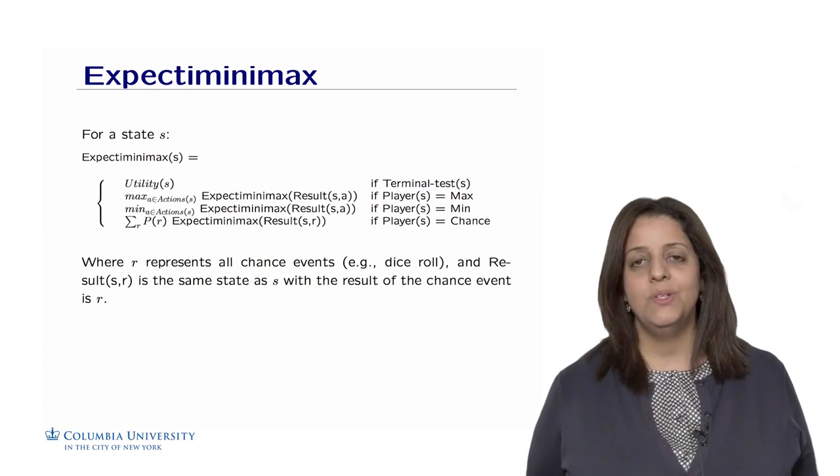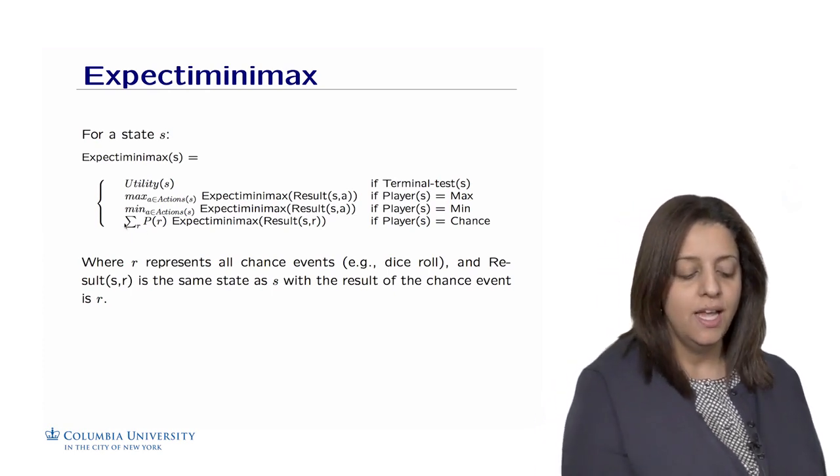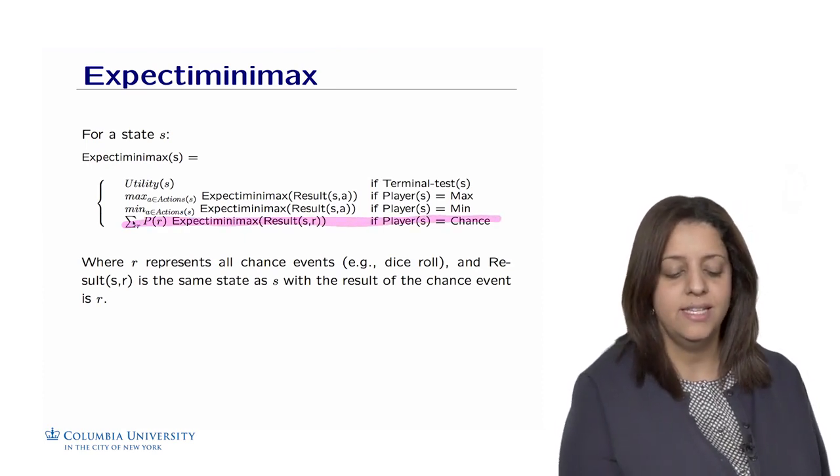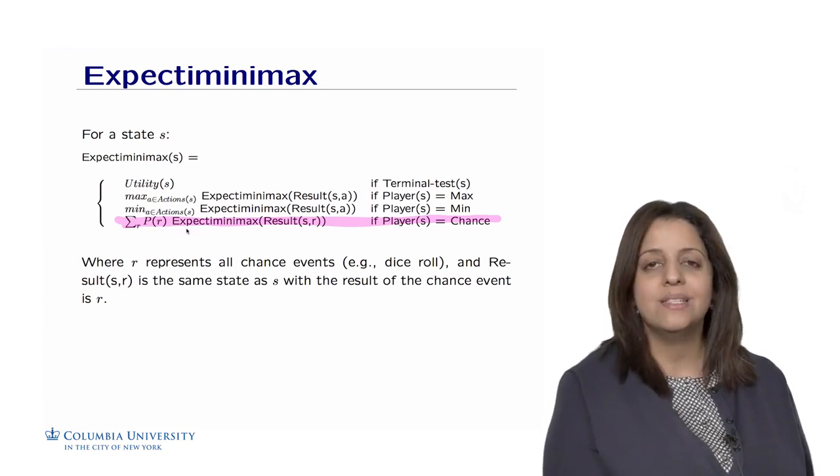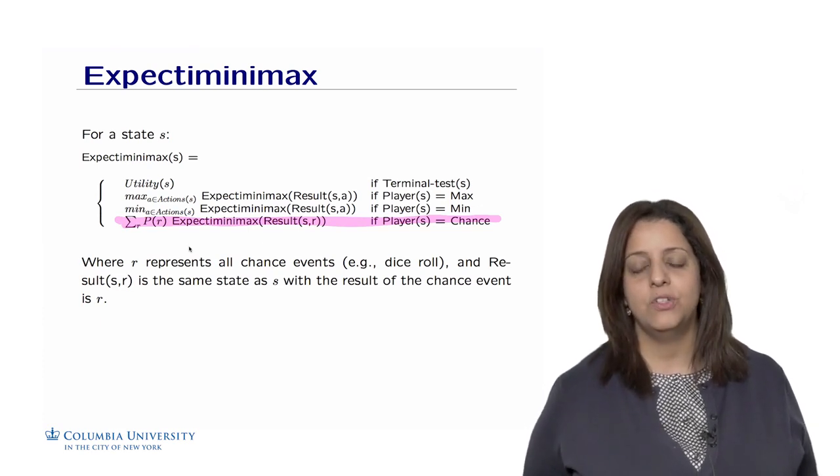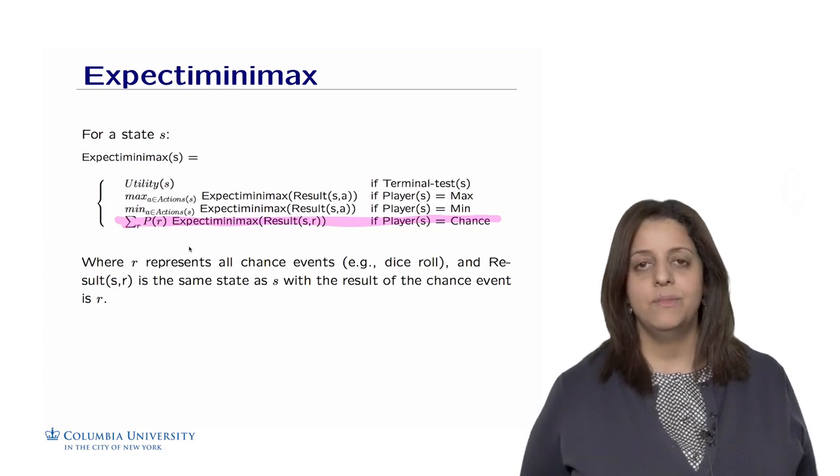The function expected minimax will look like the minimax function, with the exception that we introduce a third condition in which we consider the case for chance. If it's a chance node, then we calculate the weighted sum of the probability of the outcomes for this node. We take the weighted average or expected value of the outcomes of the nodes starting from this position.